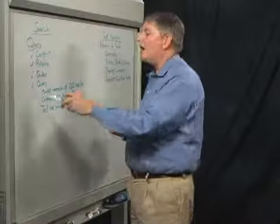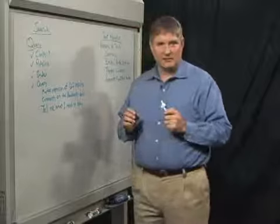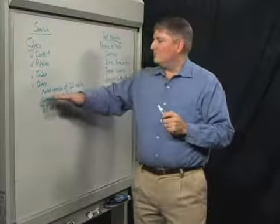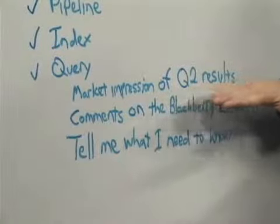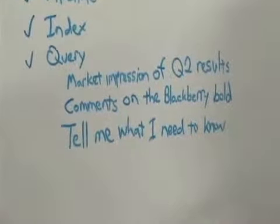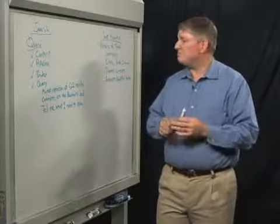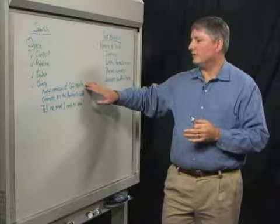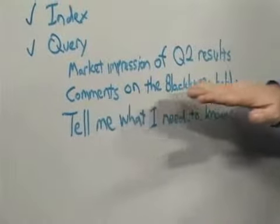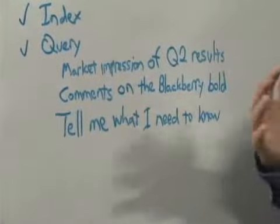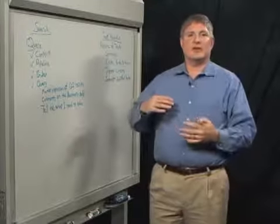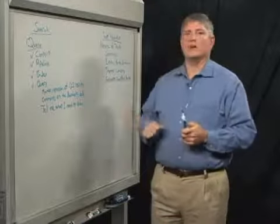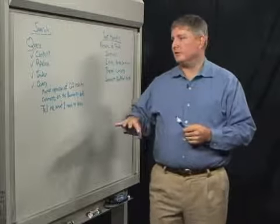So what kind of questions are we typically seeing in search systems? So this is market impression of Q2 results. That's a fairly common kind of question you would get in an enterprise search system. Fairly easy for an enterprise search system to handle and give you pretty nice results. Comments on the BlackBerry Bold. If you were BlackBerry, you were RIM and you were collecting this stuff, that's the kind of question you'd be able to answer with an internal search system.